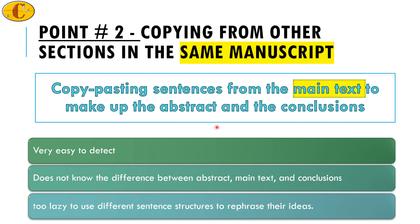The second case is copying within the same manuscript. When reviewing manuscripts, I have seen authors write three sentences in the abstract and then repeat the exact same three sentences in the introduction, conclusions, and observations. This is very easy to detect because the reader keeps seeing the same thing repeatedly. It also shows that the author does not understand the difference between abstract, introduction, conclusions, and observations. Observations and conclusions are not the same — there is a reason they are separate sections.